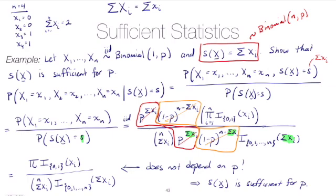In class we did an example with a sample from a Bernoulli(1, p), where the sufficient statistic was the sum of the xᵢ's. We showed from the definition that the probability of the sample conditioned on the value of the sufficient statistic equals a quotient that has no p's in it — it does not depend on p. Therefore, the thing we conditioned on, s of x, the sum of the xᵢ's, is a sufficient statistic.